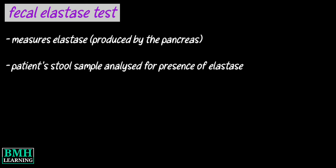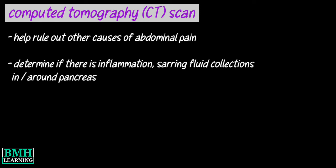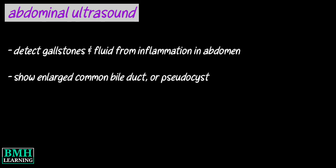During the Fecal elastase test, a patient's stool sample is analyzed for the presence of elastase. A computed tomography scan can help rule out other causes of abdominal pain and can also determine whether there is inflammation, i.e. swelling, scarring, or fluid collections in or around the pancreas. Abdominal ultrasound can detect gallstones and fluid from inflammation in the abdomen.